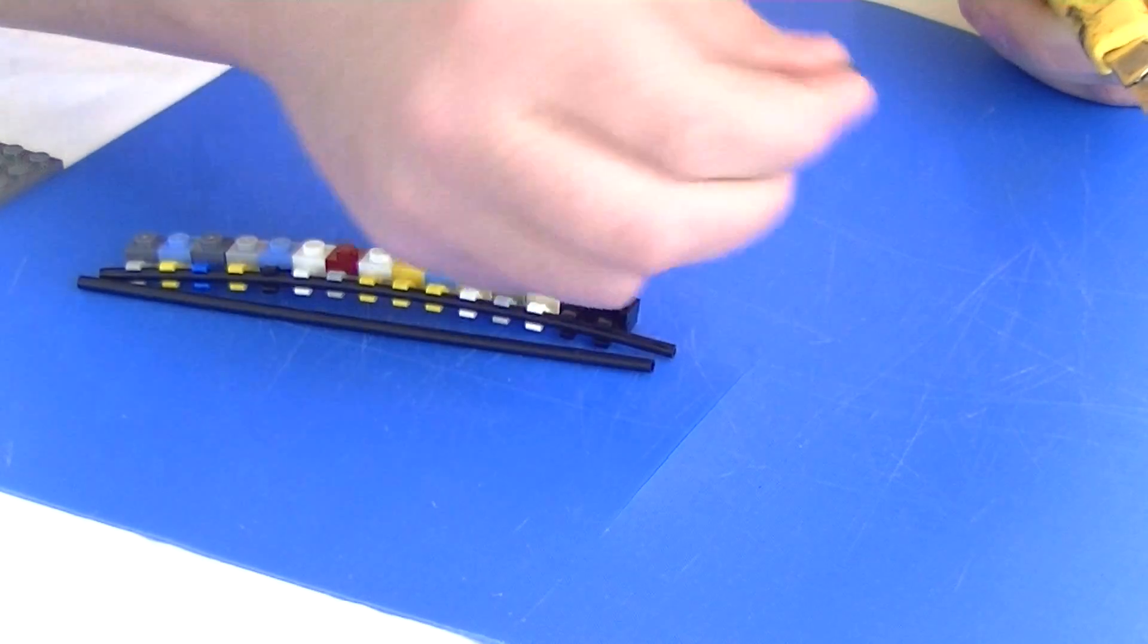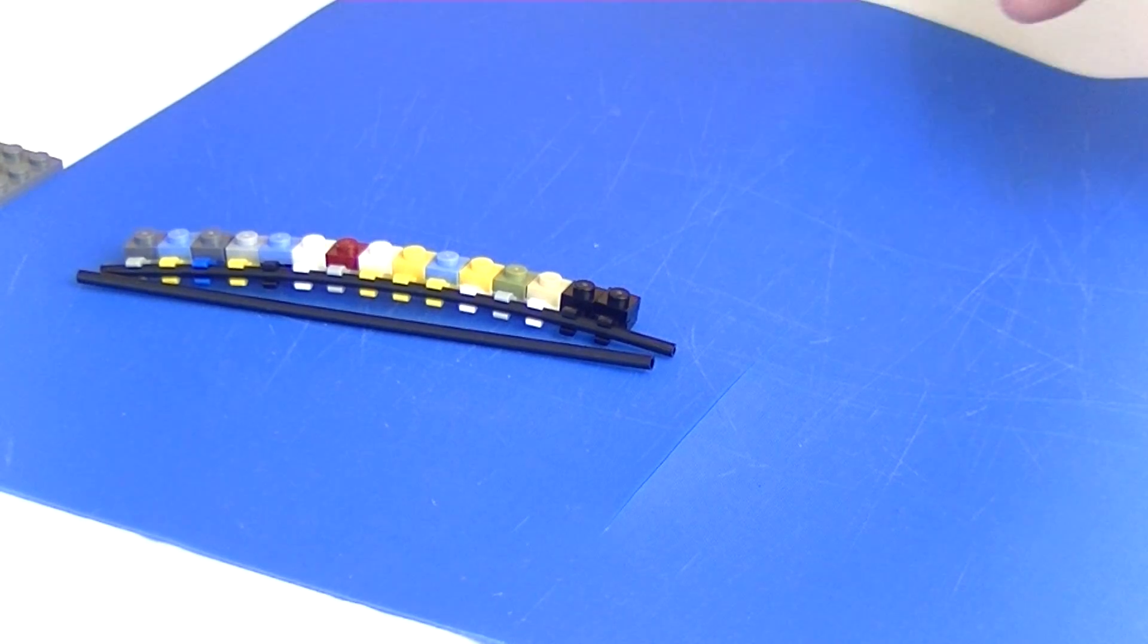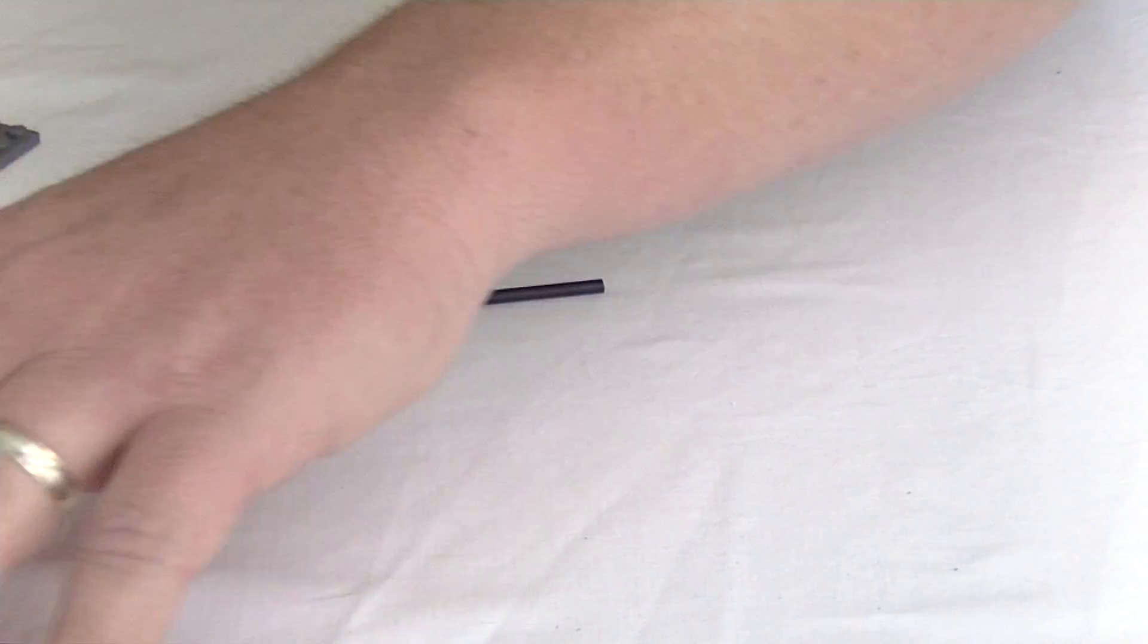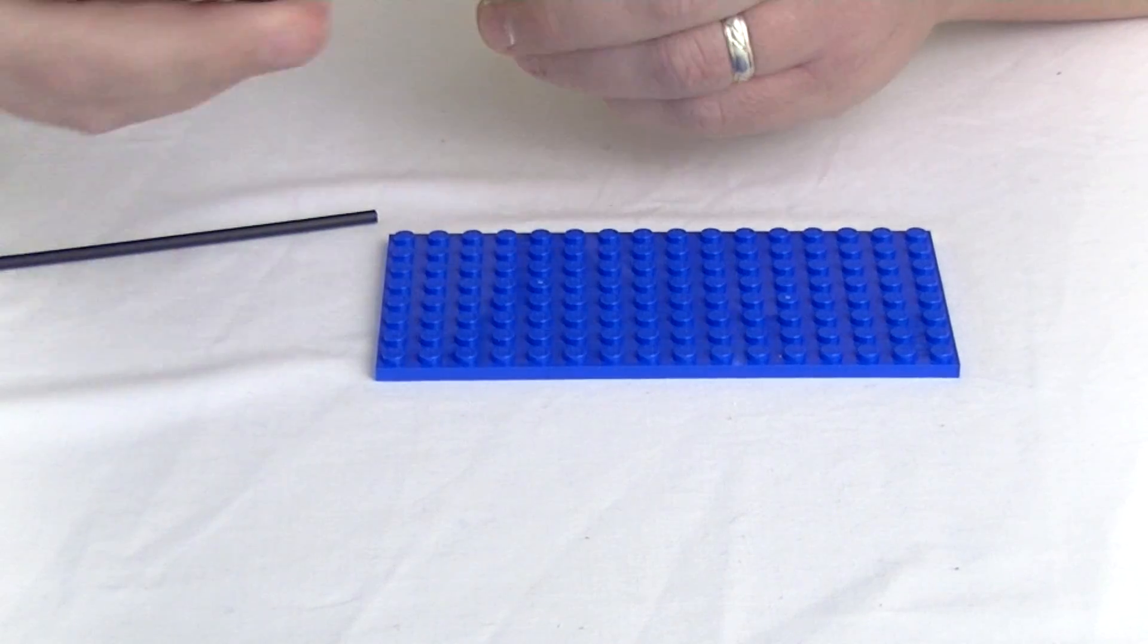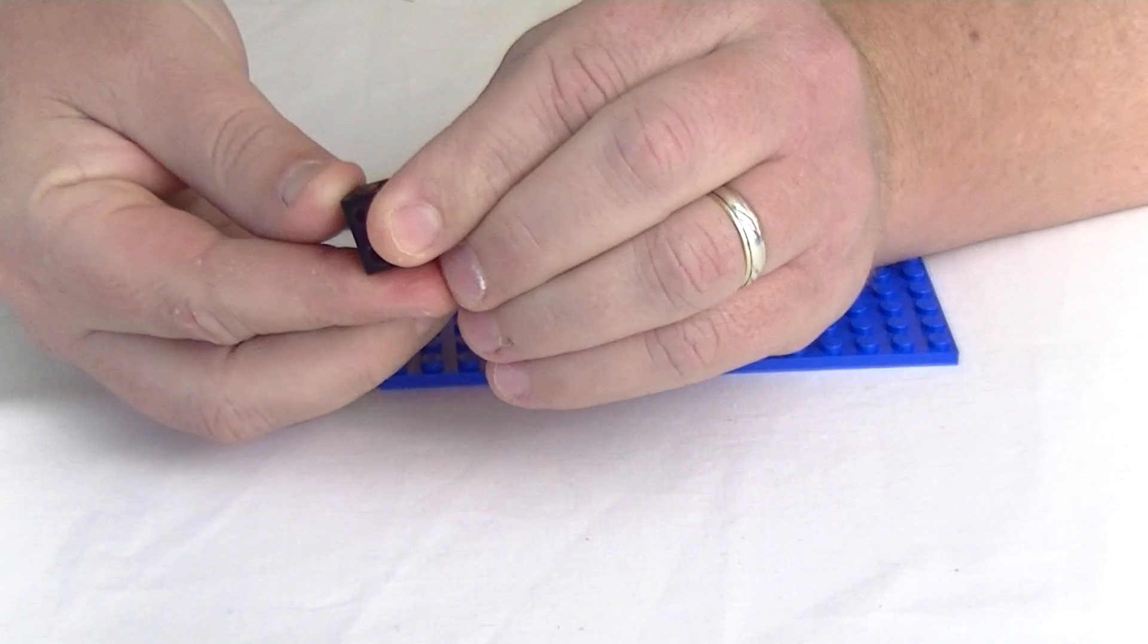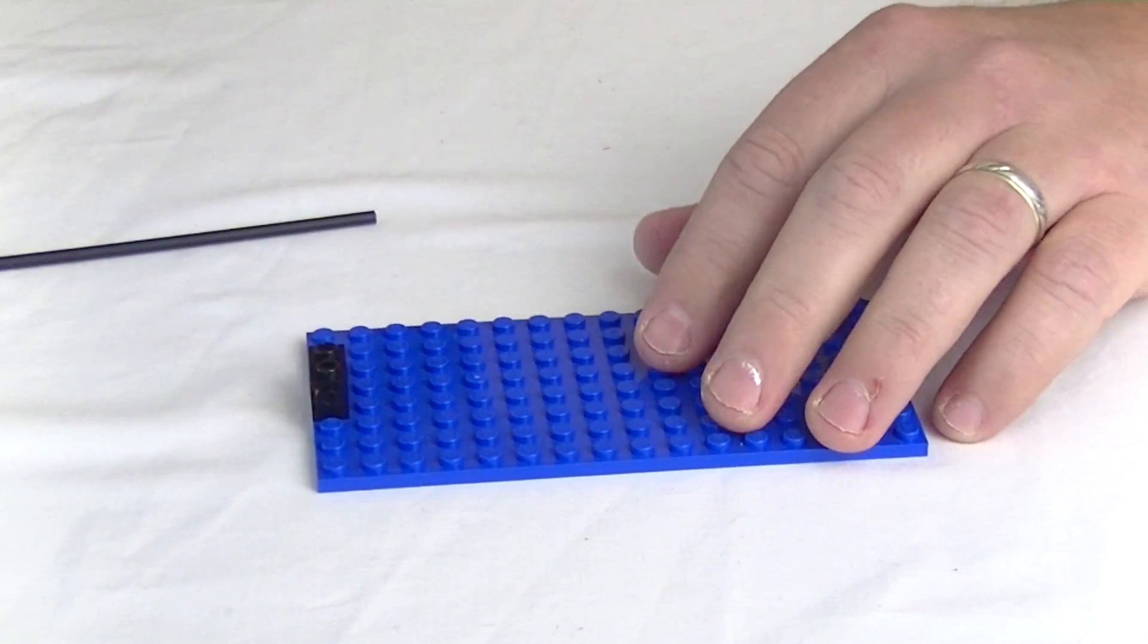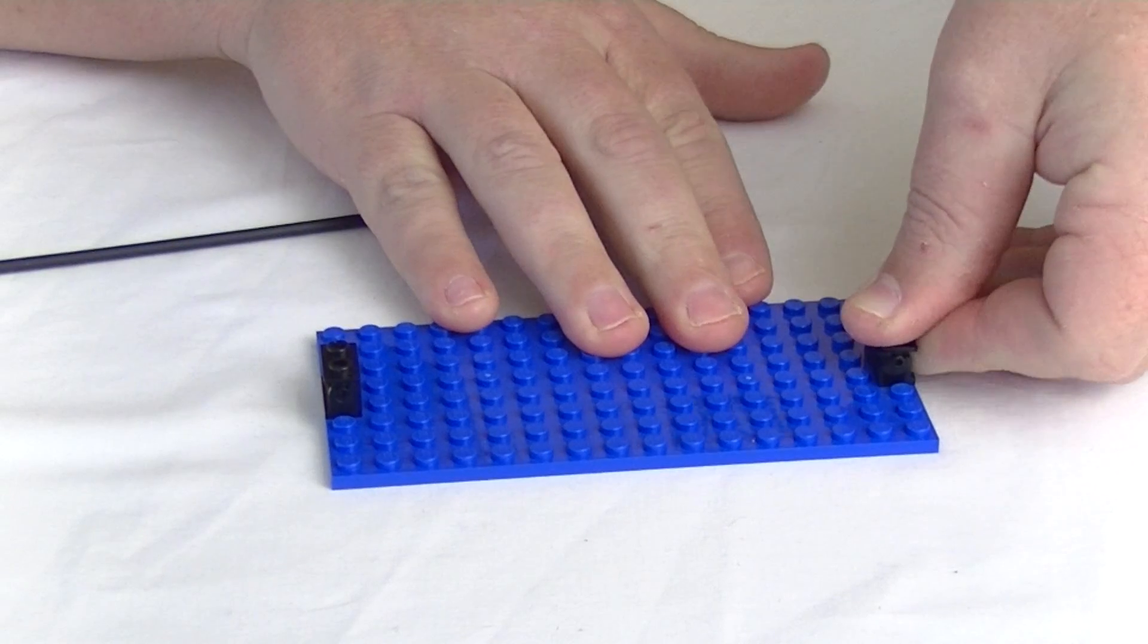I always keep these little off cuts because they're very handy, little bits and bobs. Okay, so the first thing to do to help get the arch is I'm using these little hinge bricks here. And I'm just going to put those on the end like that. And the other one is here. Put those on like so.